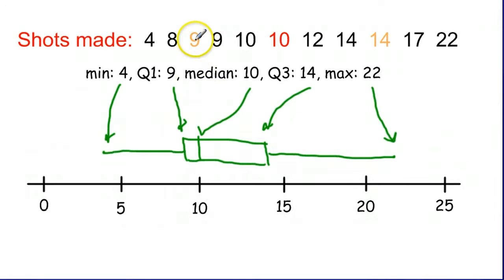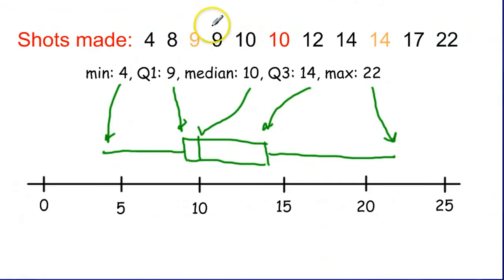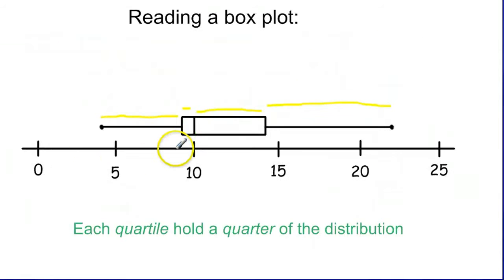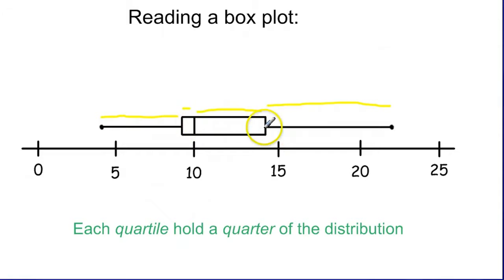If we go back to our list of numbers, you'll notice that the four is kind of far away from quarter one nine, but there's a bunch of numbers crunched in between nine and ten. What the box plot shows you is how the different numbers are squished or crunched together. This 22 is farther apart from the third quarter of 14, while nine and ten are very close. In each of these different sections, one-fourth of our data can be found.